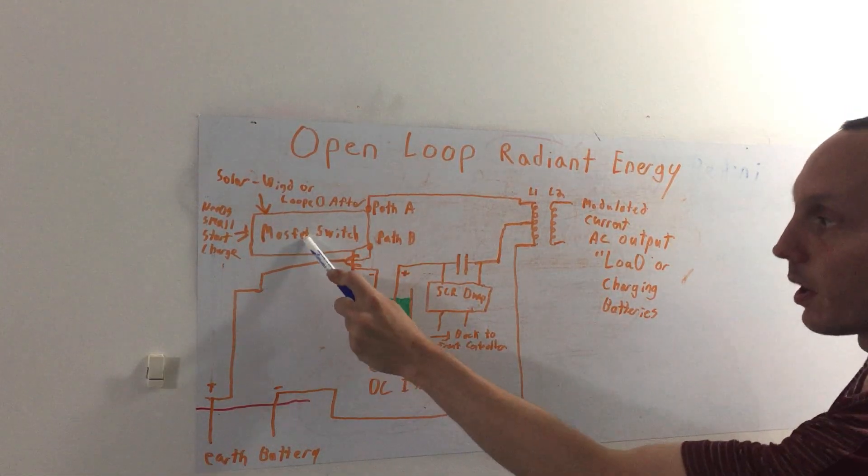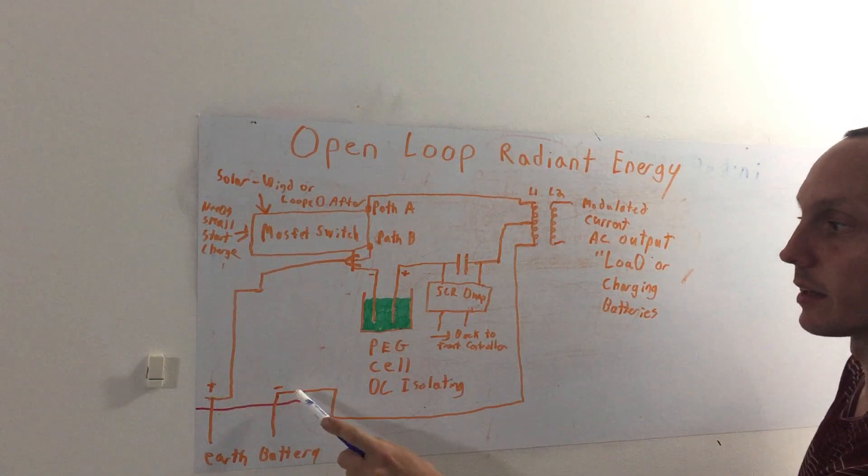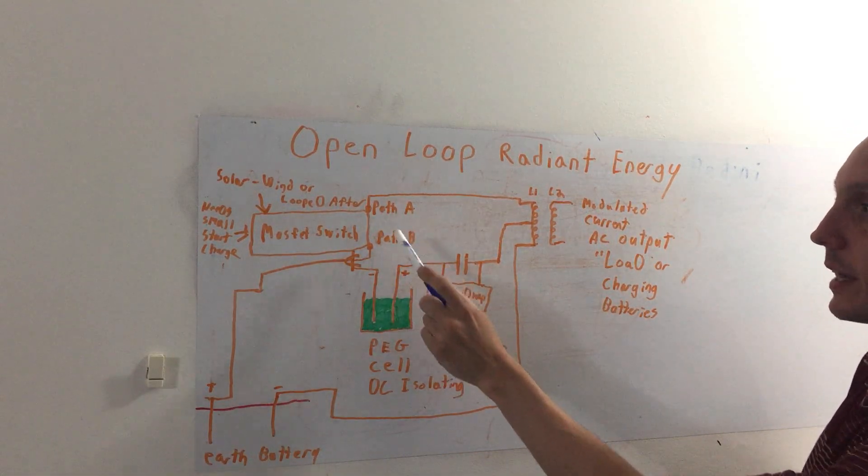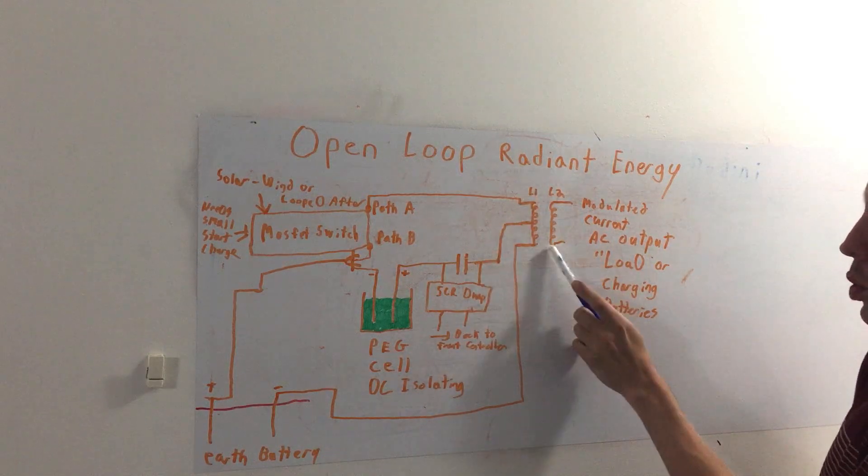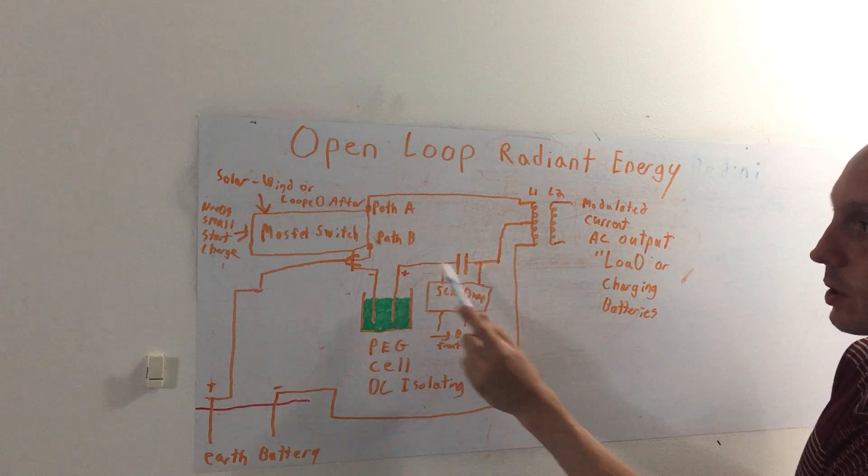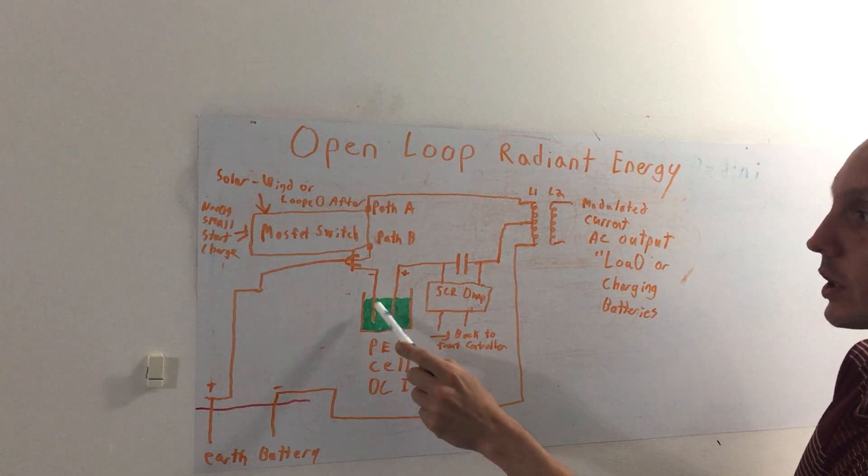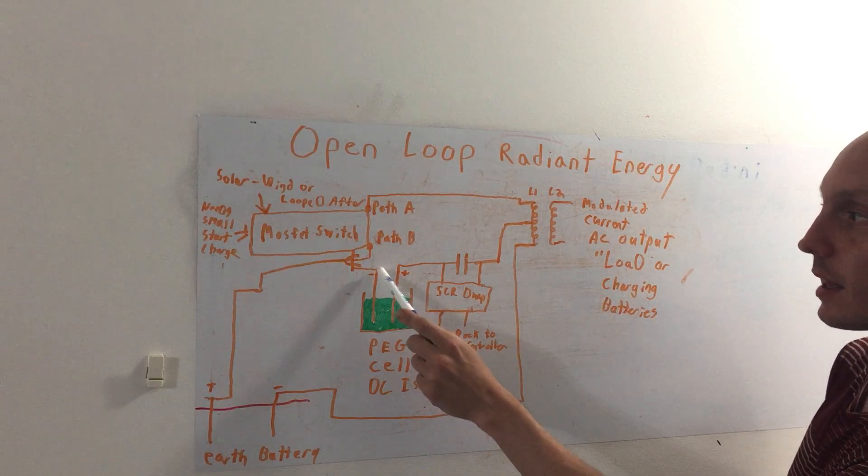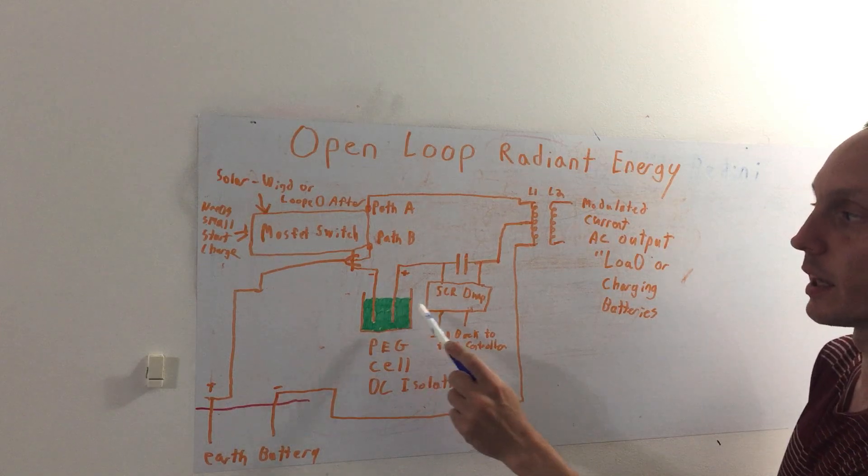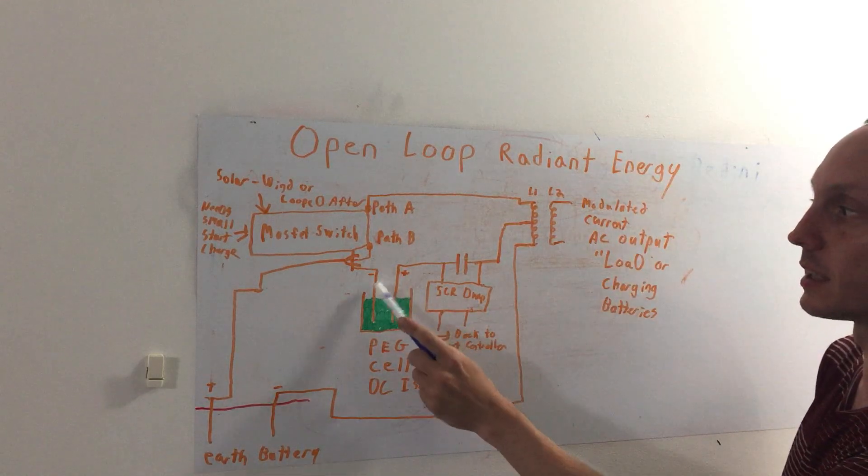Here we have our earth batteries, plus and negative. So what the MOSFET does is it switches the path A and the path B through an L1 coil here. We have a regular charging capacitor and when the MOSFET switches the path, the negative of the PEG cell connects. We have to make sure folks that it's fully electrically isolated, no continuity whatsoever, or else you lose that open loop effect.